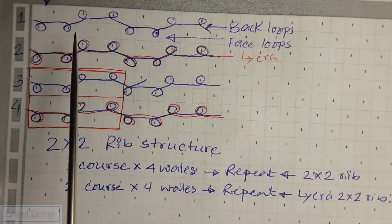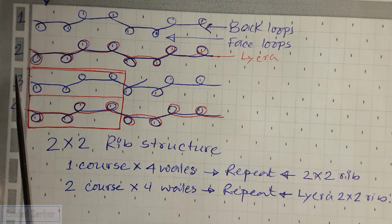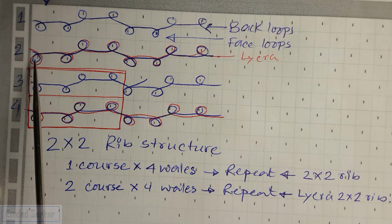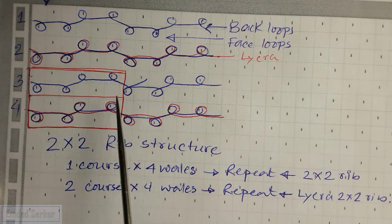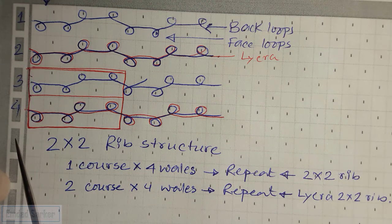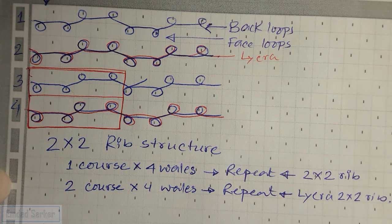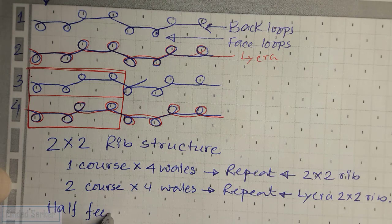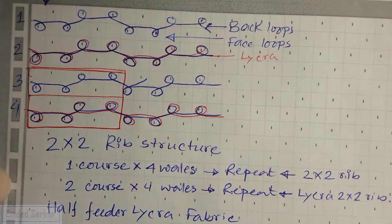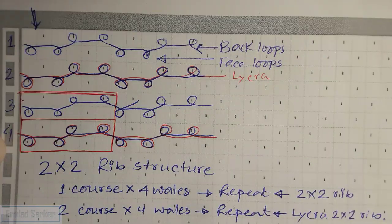It is very clear from this diagrammatic notation that odd-number feeders will contain no lycra yarn, but in the case of even-number feeders, the feeder will contain both lycra and cotton yarn simultaneously. If there are 42 feeders, 42 feeders will contain cotton yarn and 21 feeders will contain lycra yarn. So this is a half-feeder lycra fabric.